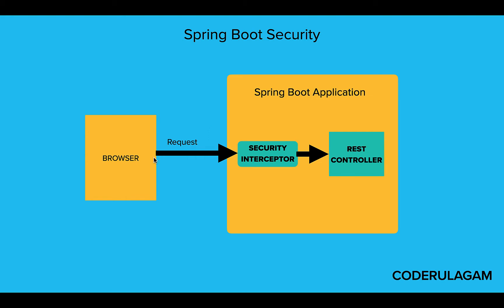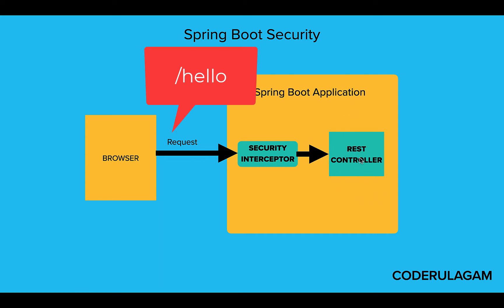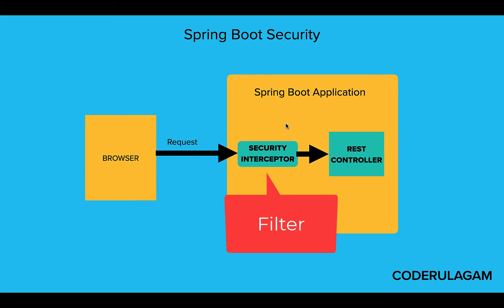In the flow diagram, you can build an application and select the first request. When you include Spring Boot Security, by default it will inject an interceptor. Any request coming in will be intercepted first.